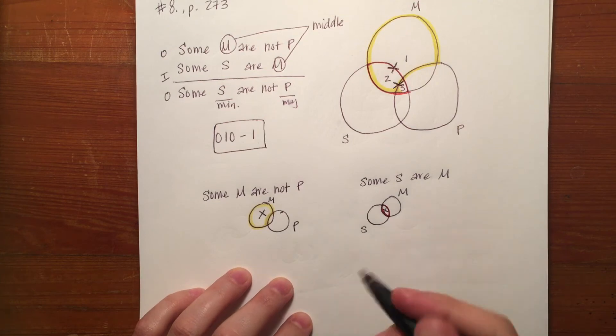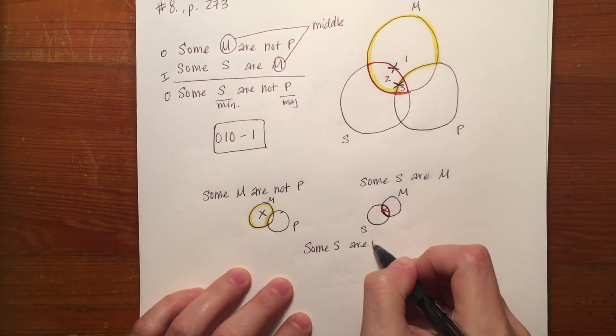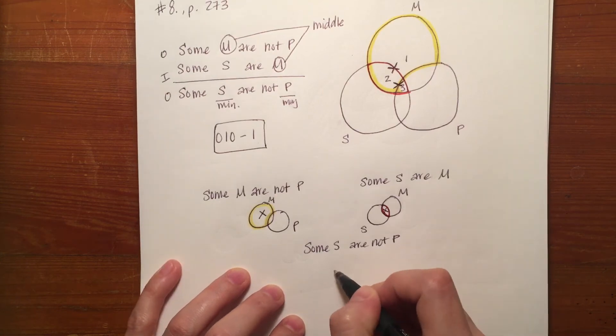Really what we ought to be doing is looking at the conclusion and saying, okay, some S are not P. Well,